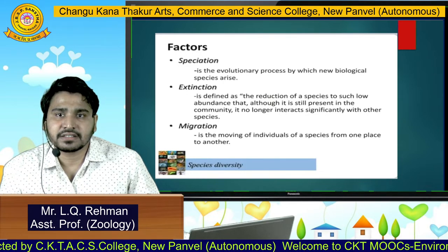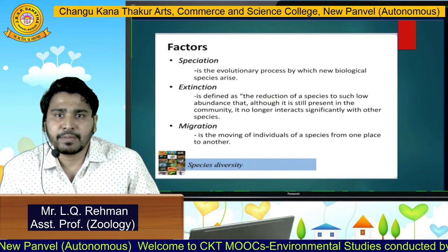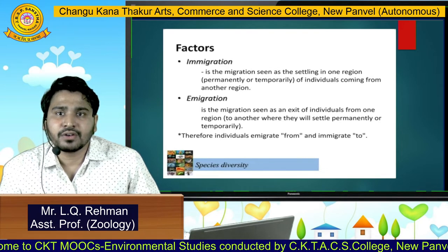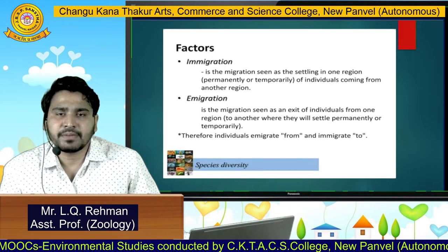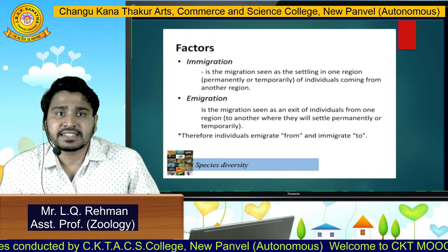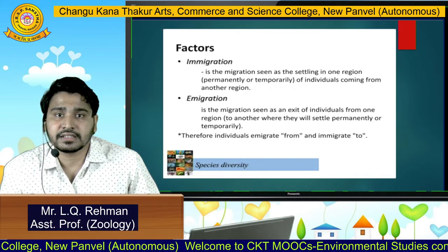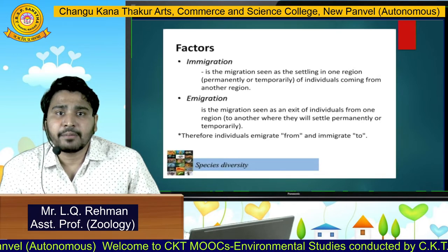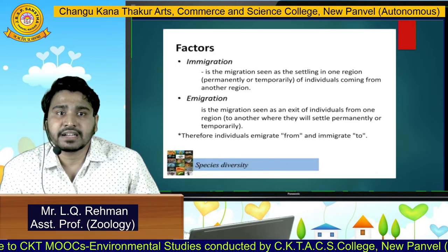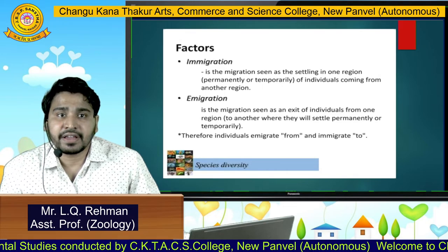Next is migration — the moving of individuals of a species from one place to another. Next is immigration. You must be very familiar with these words: immigration and emigration. Immigration is the migration seen as the settling in one region permanently or temporarily of individuals coming from another region. Emigration is the exit of individuals from one region to another where they will settle permanently or temporarily.